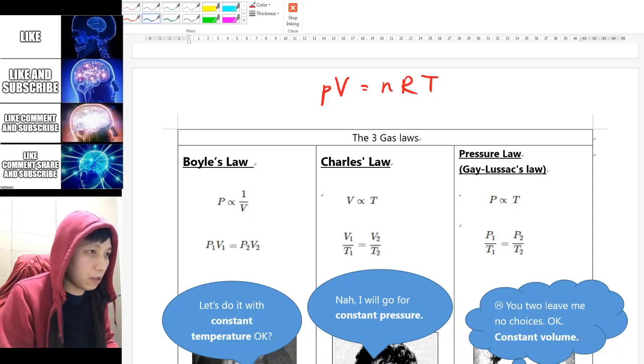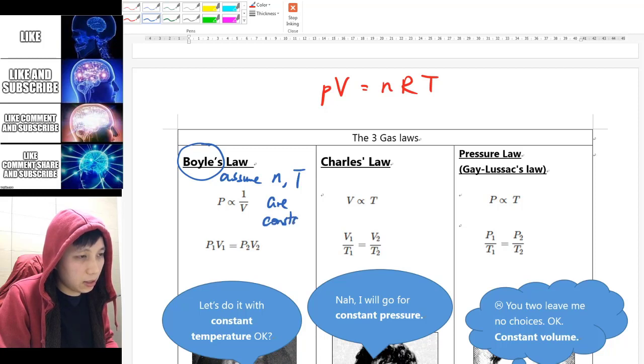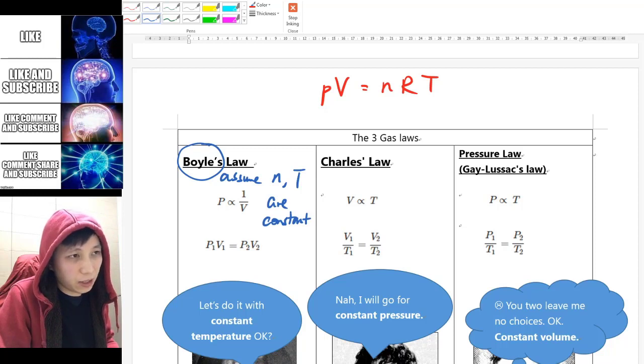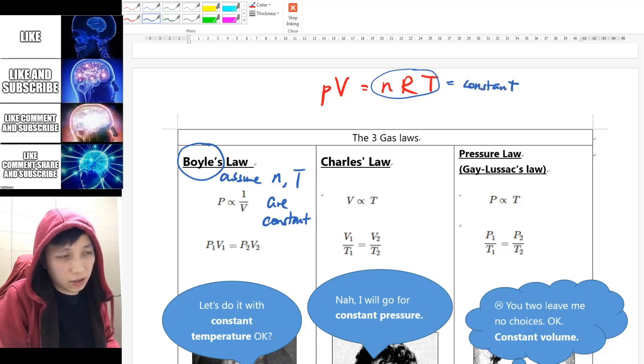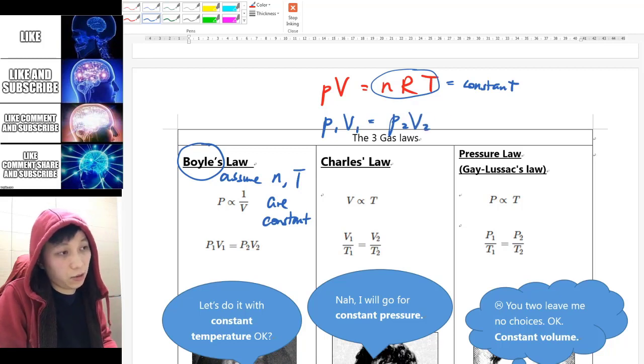So first of all, for the Boyle's law that we have learned, it actually assumes n and T are constant. It doesn't change throughout the whole experiment. And let's not forget R is also constant as well. So this whole thing is going to be a constant. And therefore PV is a constant. That means P1 times V1 is always a constant, and therefore equals to P2 times V2. And that's how you get the equation for Boyle's law.